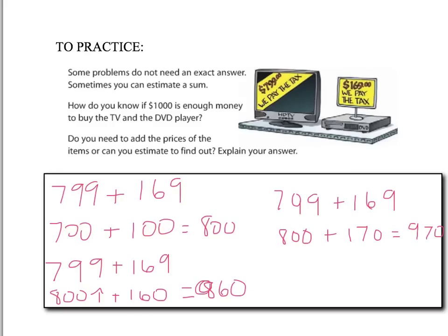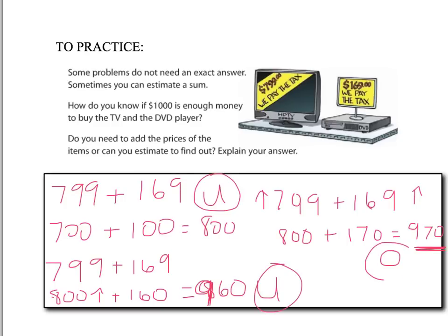Just noticed a mistake — the front-end result should be $800, since $700 plus $100 is $800, not $960. For compatible numbers, I went up on both, so that's an overestimate. For compensation, I went up 1 and down 9, so that's an underestimate. And front-end rounding is always an underestimate. So we have underestimate, underestimate, and overestimate. To find out if you have enough money, the overestimate is the best strategy — you can know for sure this is higher than the actual cost, so when you walk up to the cash register, you know you have enough money to buy that TV and DVD player.